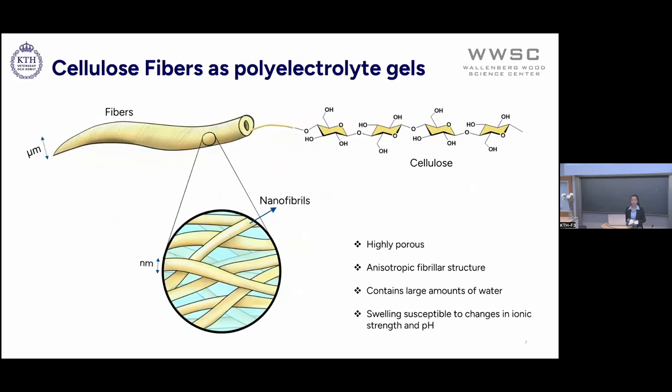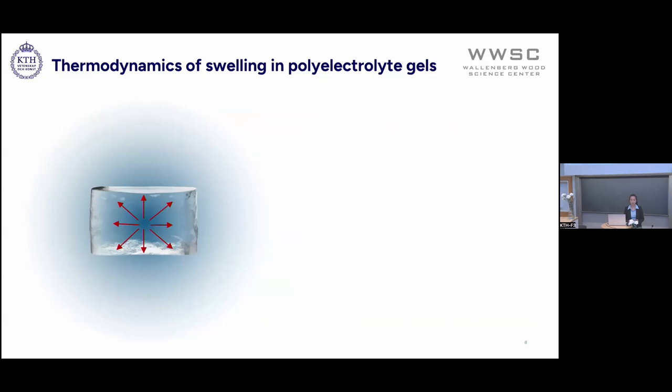After the fiber is removed from all the lignin and hemicelluloses, we have a very porous and isotropic fibrillar structure made out of mostly nanofibrils. It contains large amounts of water, and the swelling is usually susceptible to pH and ionic strength, meaning that it behaves similar to how polyelectrolyte gels behave. When liquid goes inside of the network, it expands it, and this expansion produces a difference in pressure between the inside and the outside of the network.